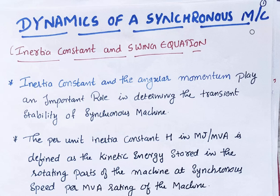Usually the Swing Equation describes the Dynamics of a Synchronous Machine. To derive the Swing Equation we require the inertia constant. The inertia constant and angular momentum play an important role in determining the transient stability of the machine. Transient stability refers to a large disturbance which occurs in the rotor angle, falling under Rotor Angle Stability.